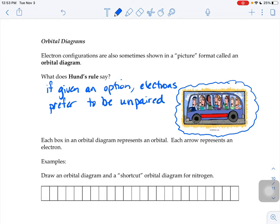You could sit in a seat by yourself, or you could sit with your arch nemesis. Well, of course you're going to sit in the empty seat, right? Why on earth would you sit with this person that makes your blood boil, if you have the option of sitting somewhere else, right? That's what Hund's Rule is saying.